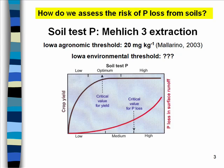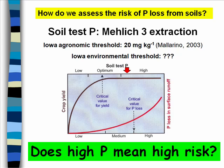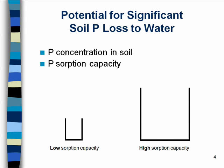But how do we assess the risk of phosphorus loss from the soil? The simple way we use today is conservative soil testing phosphorus. In Iowa, we use Melich-3 extraction. Melich and Noll 2003 defined the agronomic threshold for corn production at 20 milligram P per kilogram soil. But if your soil tests above 20 mg P/kg, does that high phosphorus mean high risk of P loss?